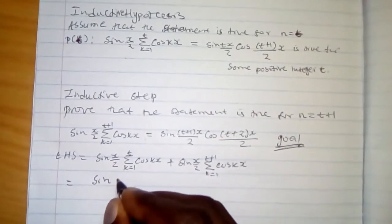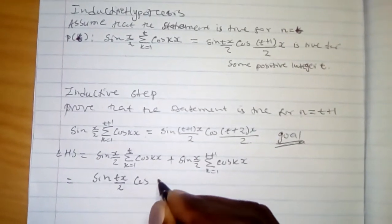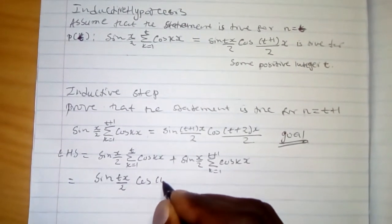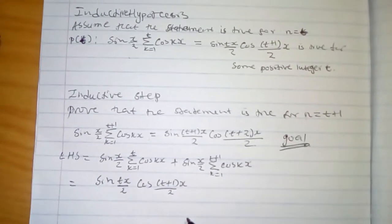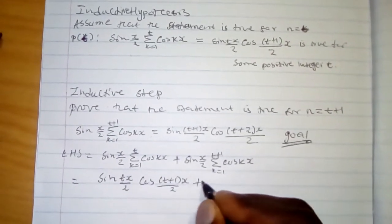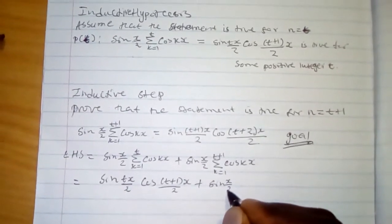Our inductive hypothesis is sine tx over 2 cos of t plus 1 over 2 by x. Then we are going to add this with sine x over 2.